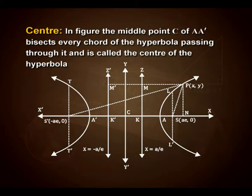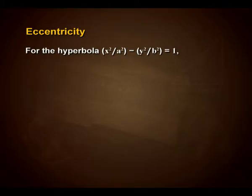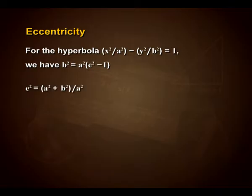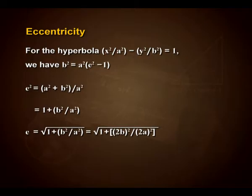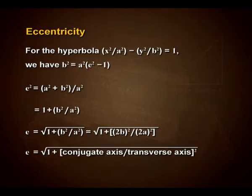Centre: the midpoint C of AA' bisects every chord of the hyperbola passing through it and is called the centre of the hyperbola. Eccentricity: for the hyperbola x²/a² − y²/b² = 1, we have b² = a²(e² − 1), which gives e² = (a² + b²)/a² = 1 + b²/a². So e = √(1 + b²/a²) = √(1 + (conjugate axis/transverse axis)²).